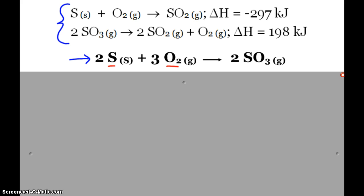So first thing I know is that I need sulfur and oxygen as reactants. So this reaction, there's sulfur as a reactant, that's great. But over here is where my oxygen is, as a product for the second reaction.